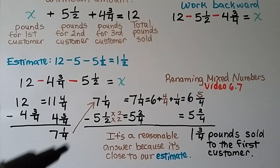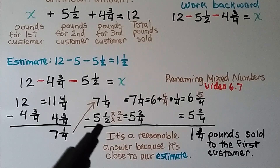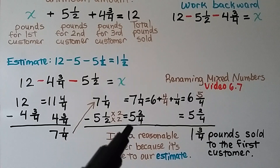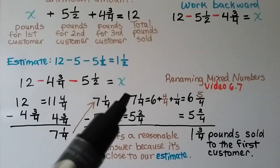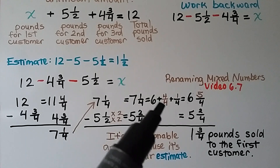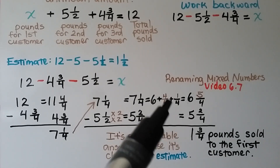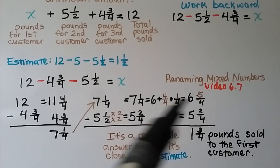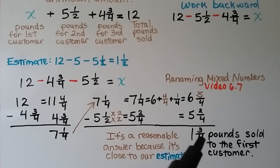Now we need to subtract 5 and a half from 7 and 1 fourth. We give them a common denominator — 5 and a half becomes 5 and 2 fourths. But we can't subtract because the 1 fourths numerator isn't large enough. We rename 7 and 1 fourth as 6 plus 4 fourths plus 1 fourth. Grouping the fractions, 4 fourths plus 1 fourth is 5 fourths, giving us 6 and 5 fourths. Now we subtract 5 and 2 fourths: numerator 5 minus 2 is 3, and 6 minus 5 is 1. We get 1 and 3 fourths pounds sold to the first customer — a reasonable answer, close to our estimate of 1 and a half.